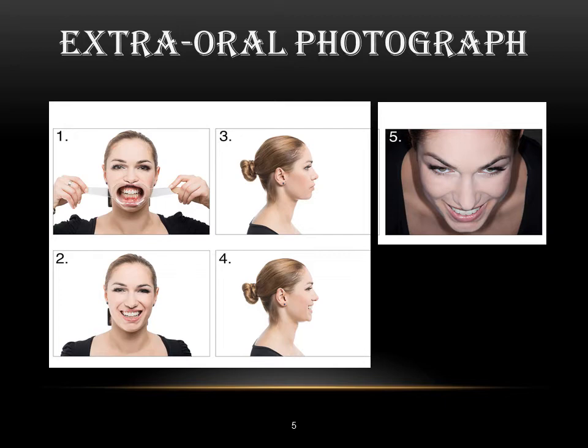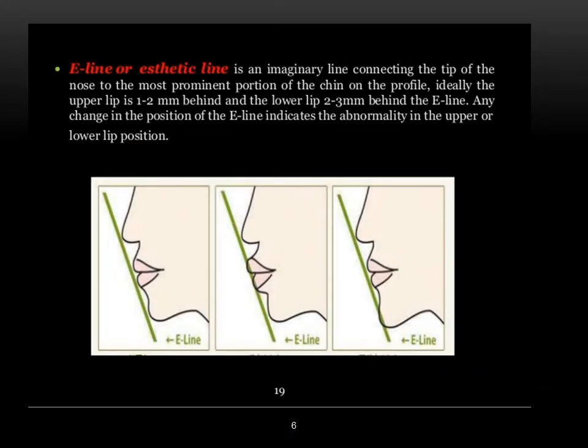Each one of these photographs gives us information about the face. Any asymmetry of the face will affect our smile design. From the profile view, I have a very important line called the E-line or aesthetic line. This is an imaginary line that connects the tip of the nose to the most prominent portion of the chin on the profile view. Ideally, the upper lip is 1–2 mm behind the E-line, and the lower lip is 2–3 mm behind the E-line.